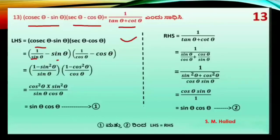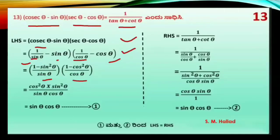Sin θ is equal to 1 divided by cos θ. Substituting these reciprocal identities into the LHS: sin θ into sin θ gives 1 minus sin²θ, which equals cos²θ. And 1 minus cos²θ equals sin²θ.